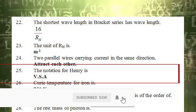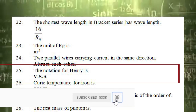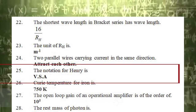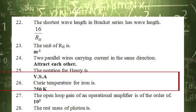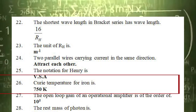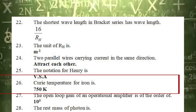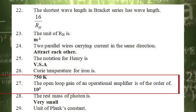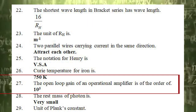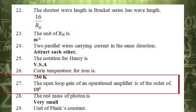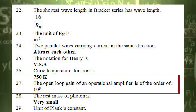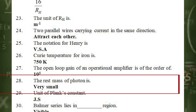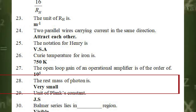The 25th statement is: the annotation for henry is. The correct option is V·s·A⁻¹. The 26th statement is: the unit temperature for iron is. The correct answer is 750 K. The 27th statement is: the open loop gain of an operational amplifier is of the order of. The correct answer is 10 raised to the power 5. The 28th statement is: the rest mass of a photon is. The correct answer is zero (very small).